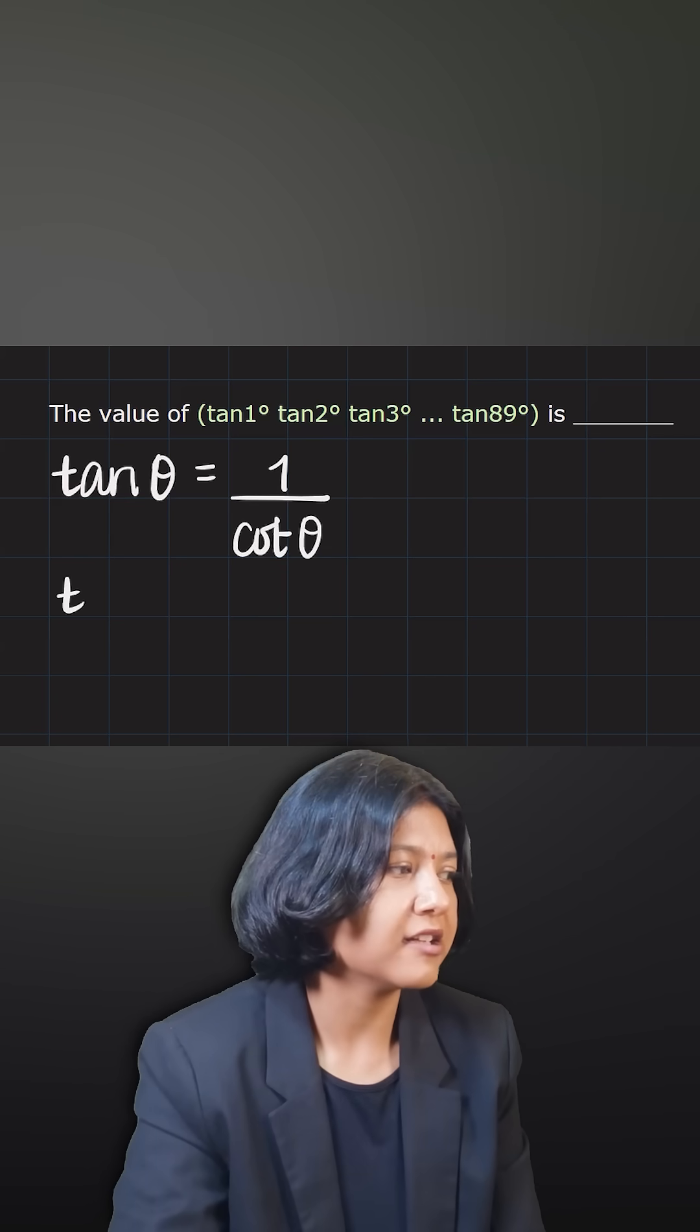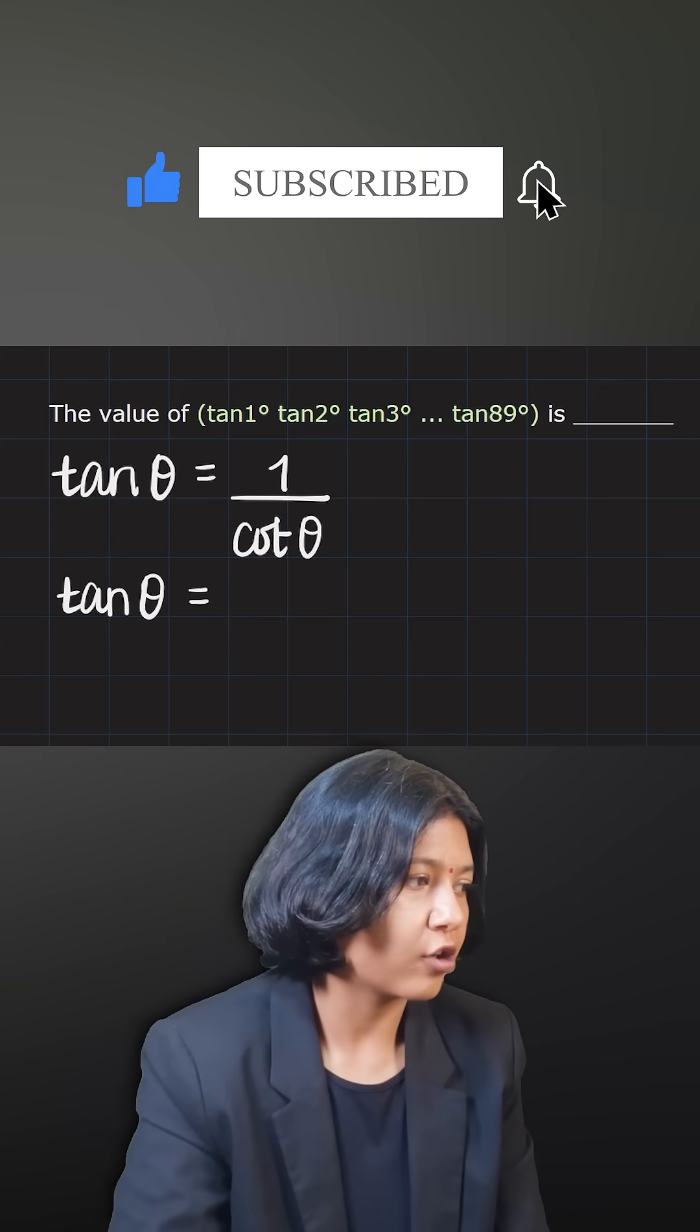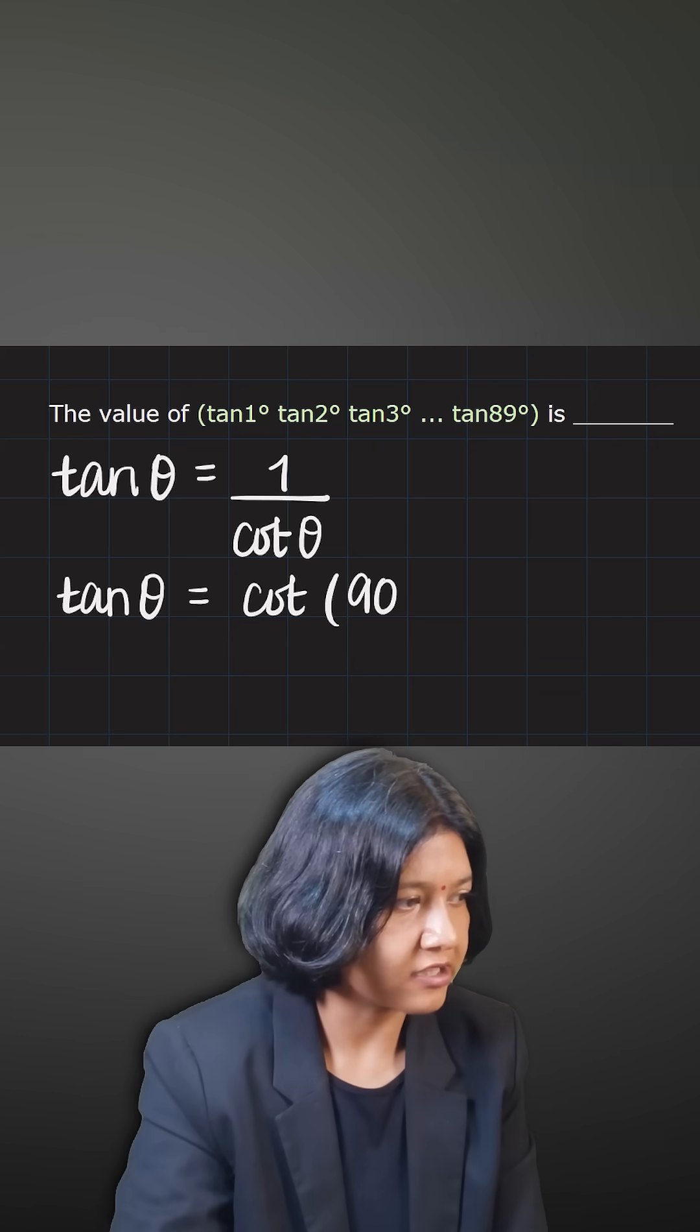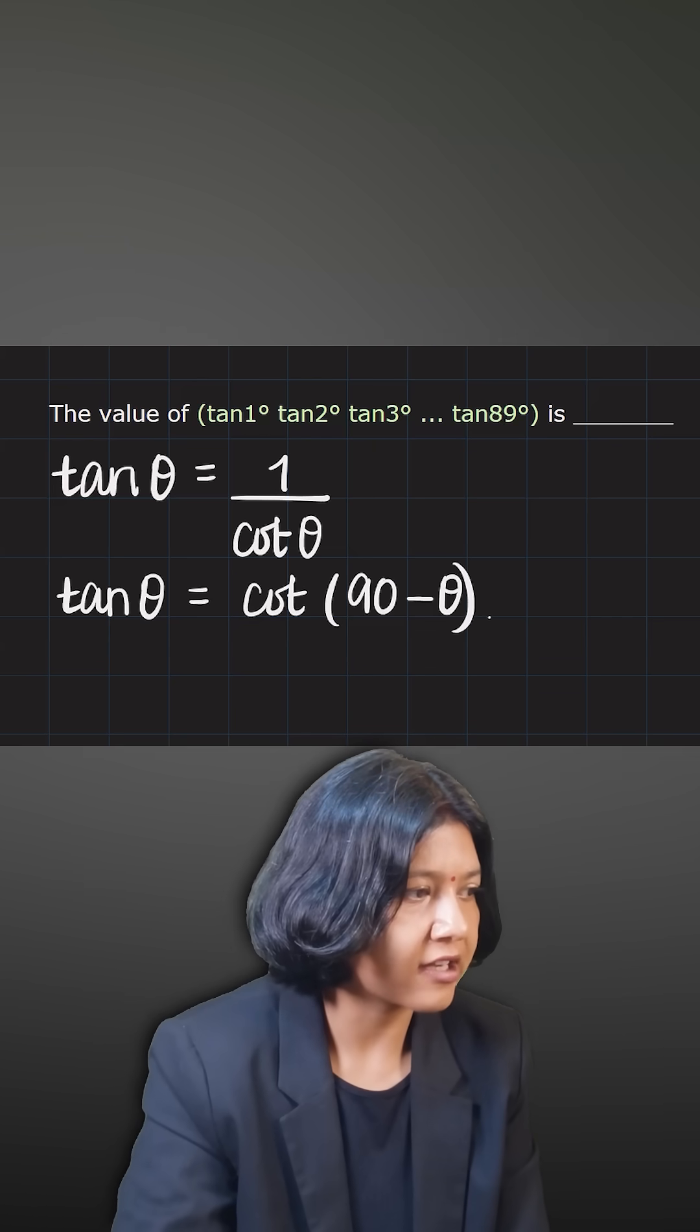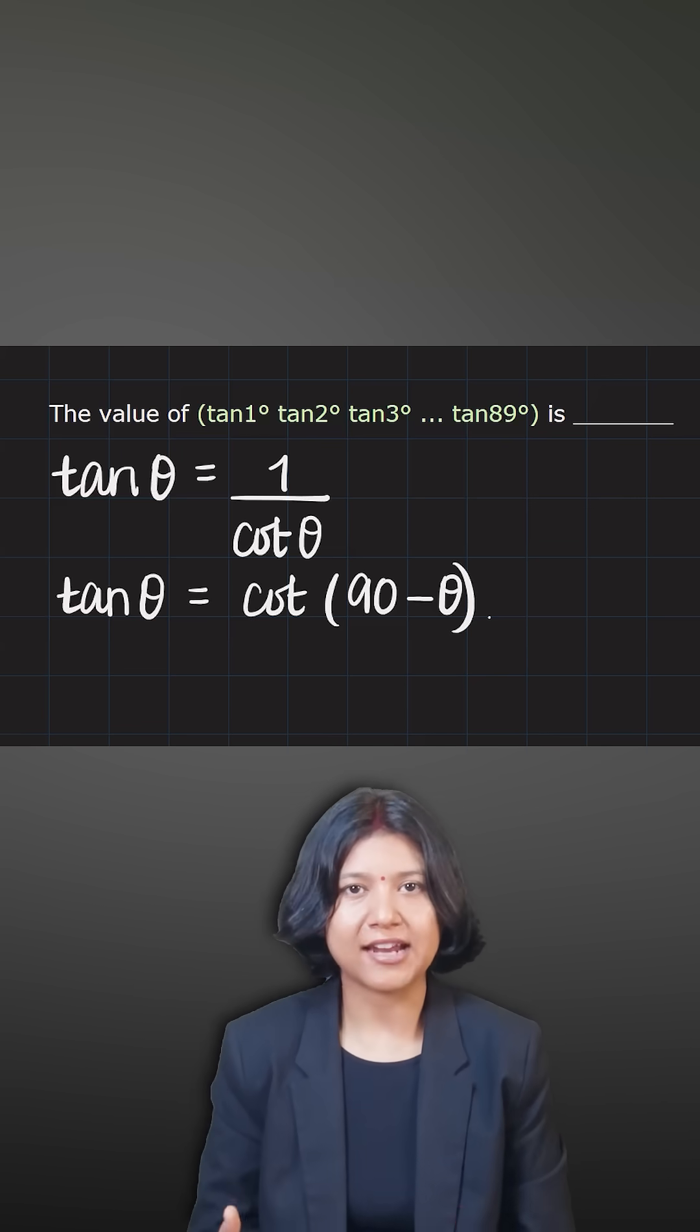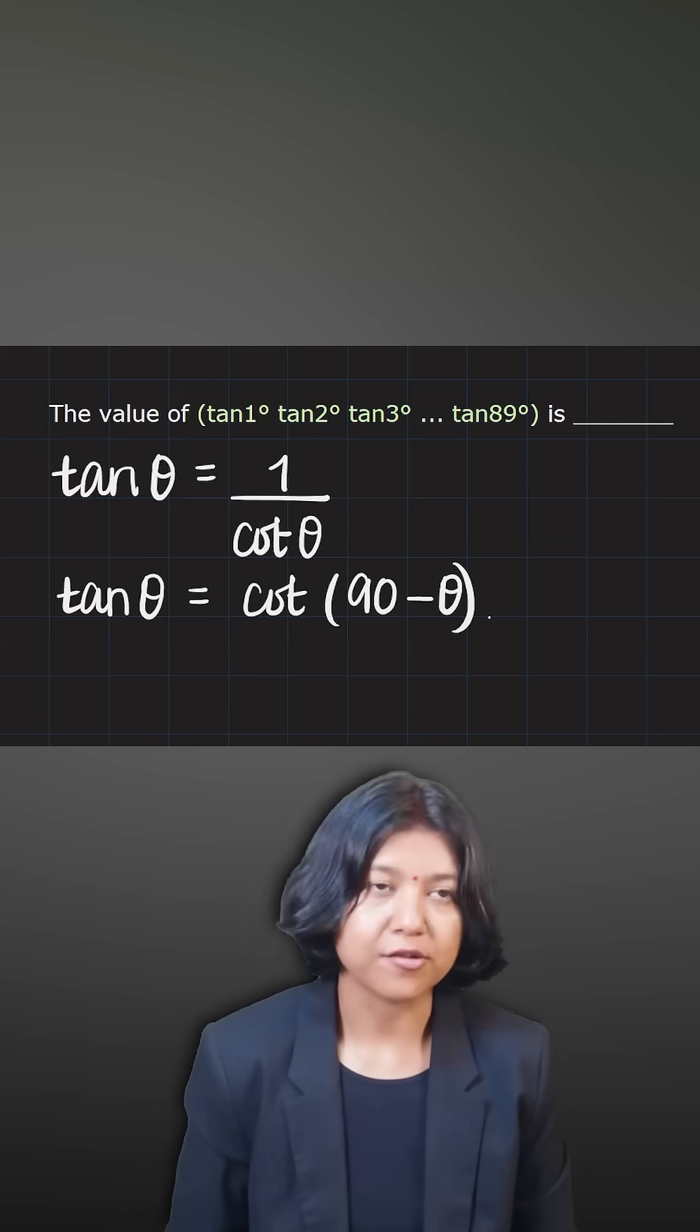Apart from this, you should also know that if tan theta is there, I can always write that equal to cot of 90 minus theta, because two angles adding up to 90 degrees will have the same value for sine and cos and secant and cosine.